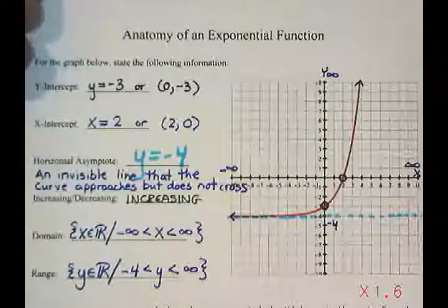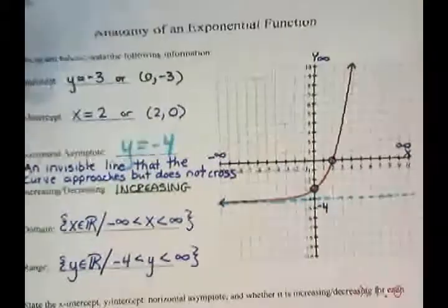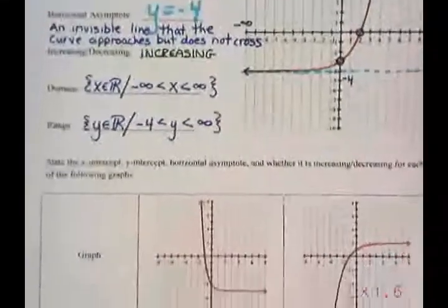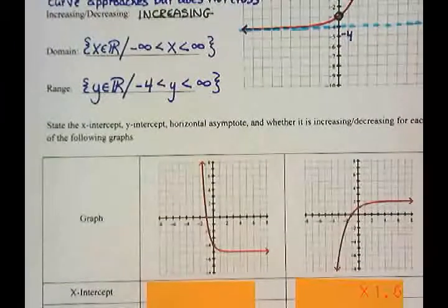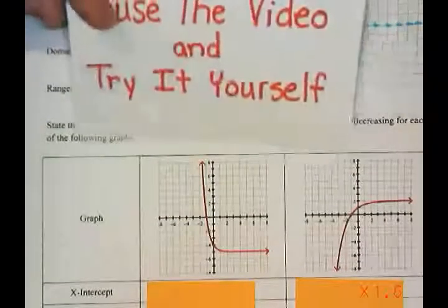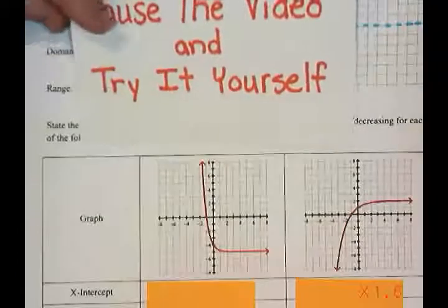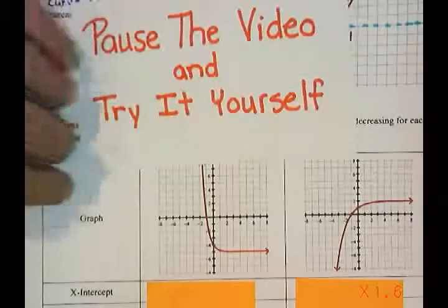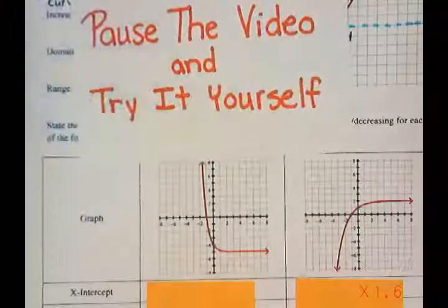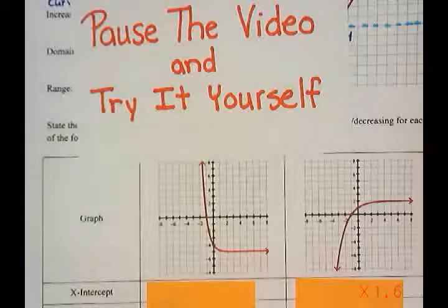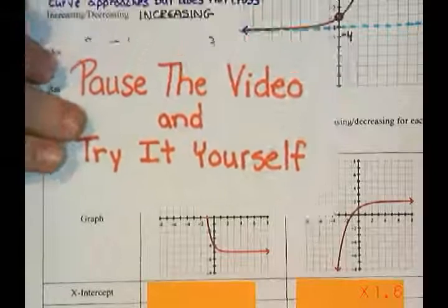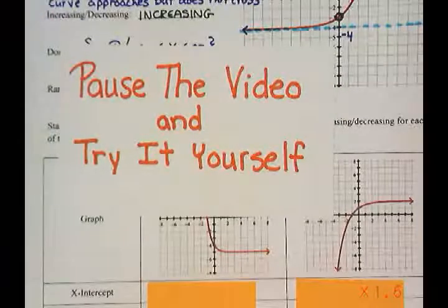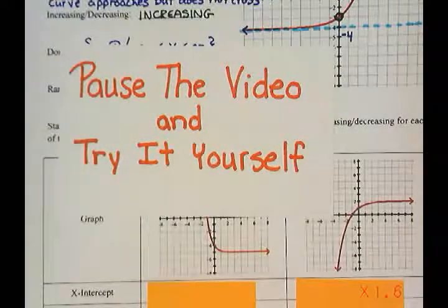I'd like you to pause the video for a minute and fill in the information on the graphs. Identify the x-intercept, the y-intercept, the vertical asymptote, and whether it's increasing or decreasing. This is the point where you should pause the video, try it yourself, and then restart it once you've got your answers.